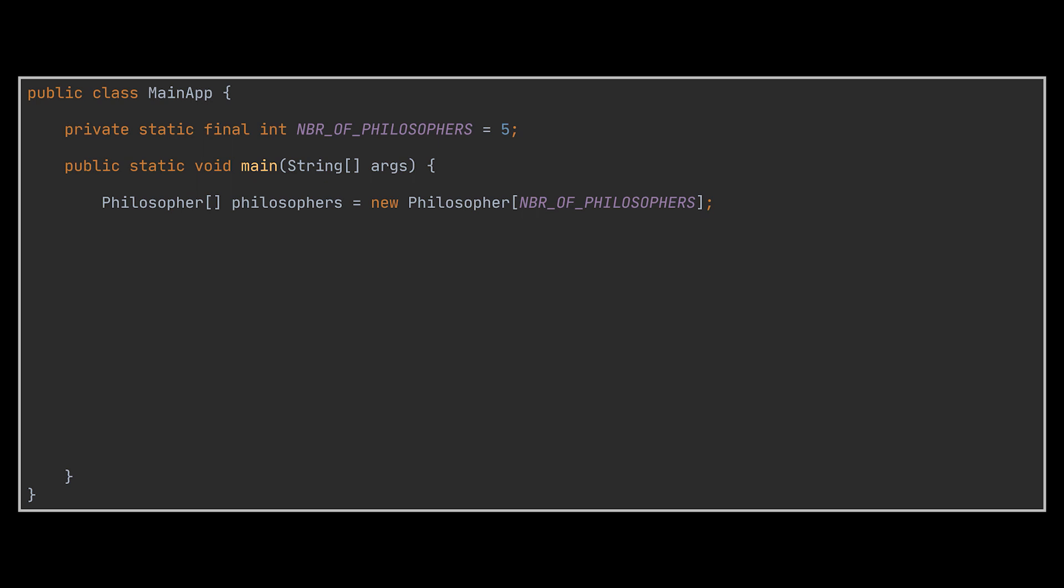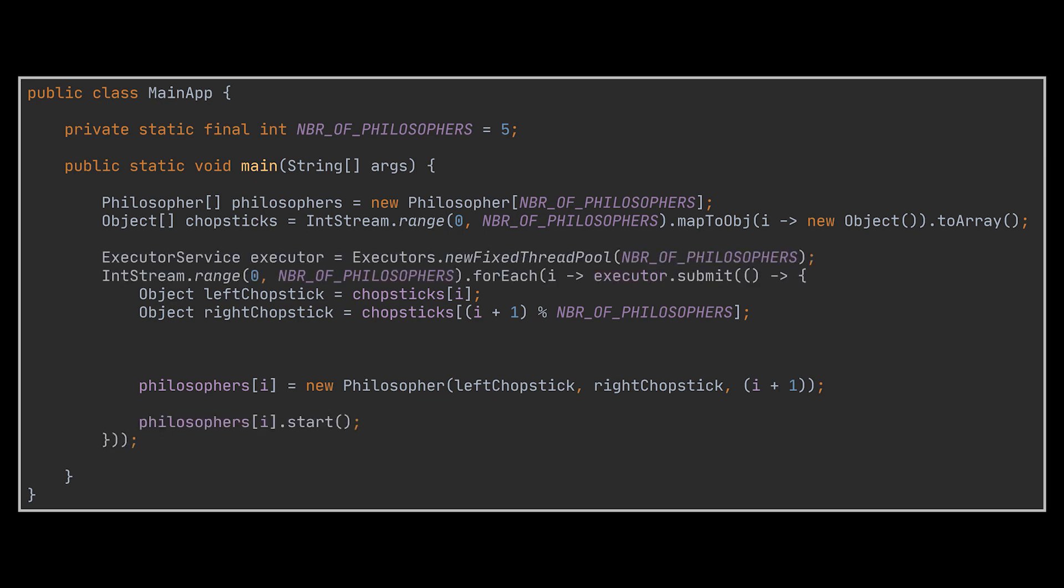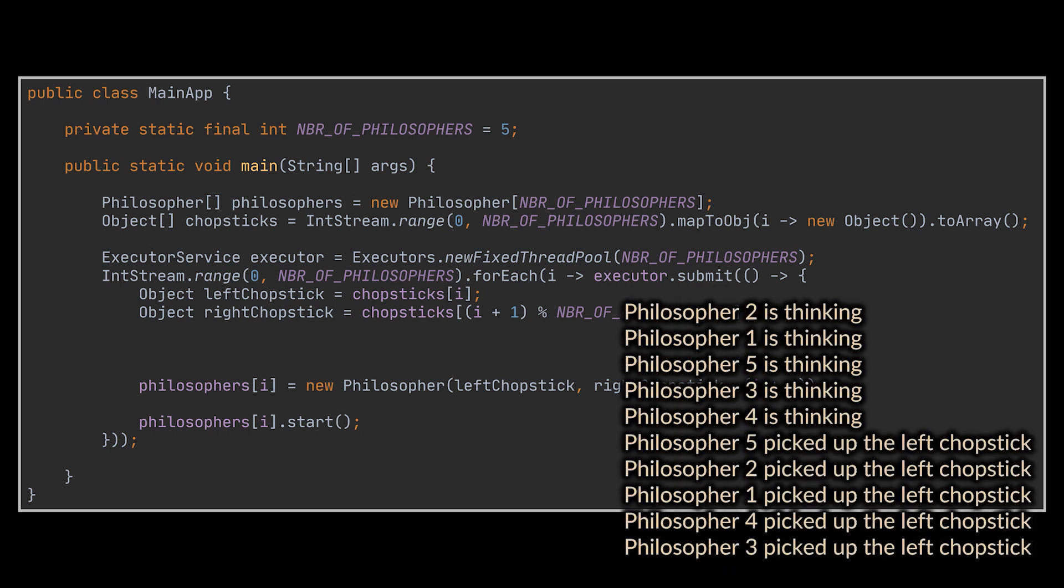To kickstart the whole process, we'll write a client that creates five philosophers of the class we just wrote. We'll model each of the chopsticks as generic Java objects and make as many of them as there are philosophers. We then pass each philosopher his left and right chopstick using the constructor we created, and finally the philosophers we instantiated will be launched at the same time with the help of the start method.